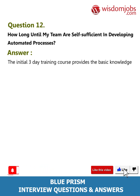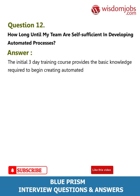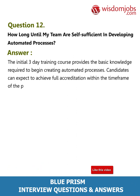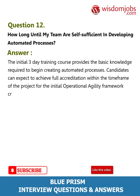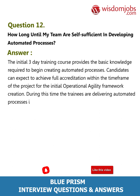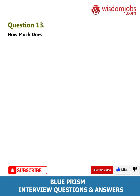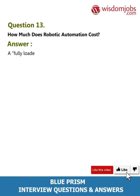Answer: The initial three-day training course provides the basic knowledge required to begin creating automated processes. Candidates can expect to achieve full accreditation within the timeframe of the project for the initial operational agility framework creation. During this time, the trainees are delivering automated processes into the production environment, therefore generating business benefit. Question 13: How much does robotic automation cost?